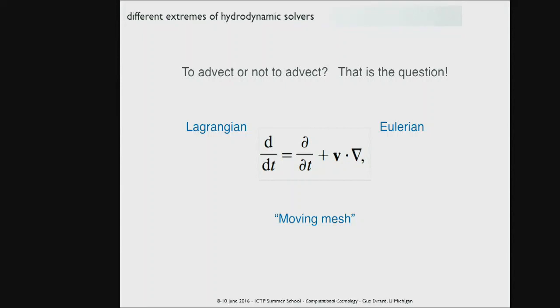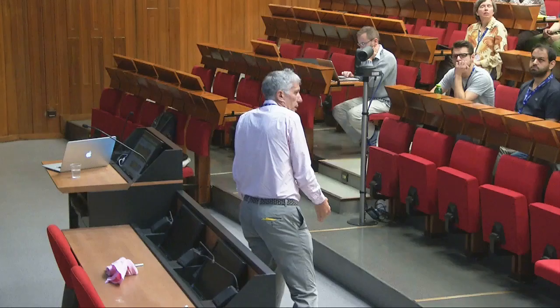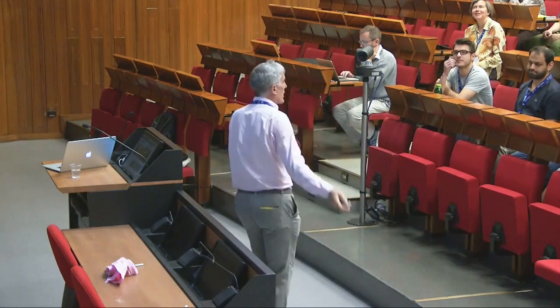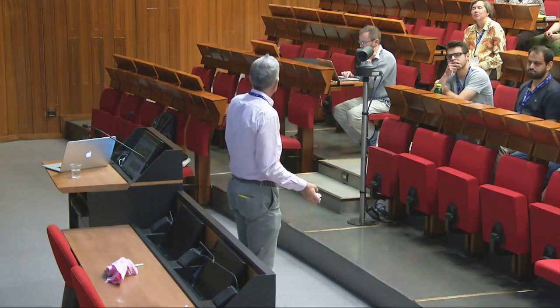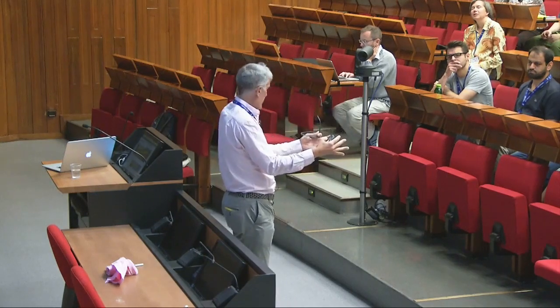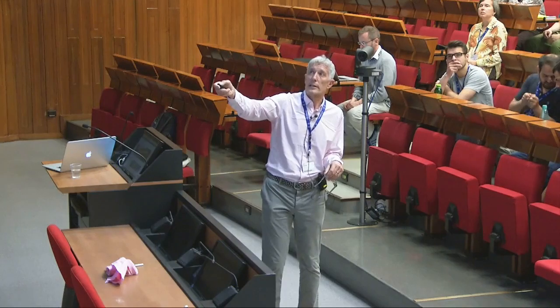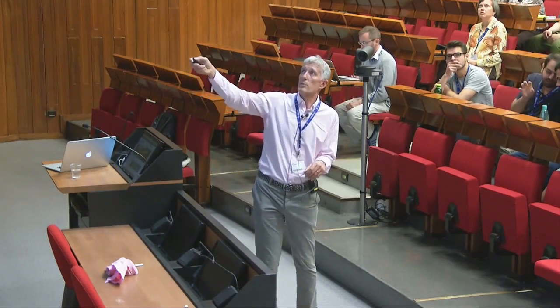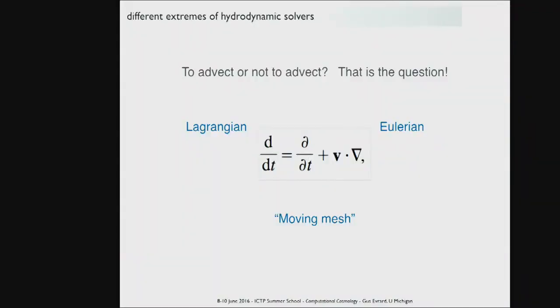Eulerian vs. Lagrangian: if you use the method of characteristics and follow the streamlines of a flow — like a leaf flowing down a stream — the Lagrangian approach is to follow the leaf and write whole derivatives of quantities at the leaf's position. As opposed to sitting in the stream and watching the leaf go by, which is the Eulerian approach where the time rate of change involves both production terms and things advecting through your fixed cell. It's a whole derivative versus a partial derivative. Eulerian codes take the fixed-frame approach, Lagrangian methods follow the flow, and there are new moving-mesh techniques that try to have the best of both worlds.